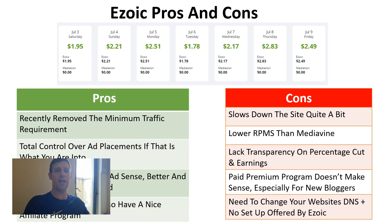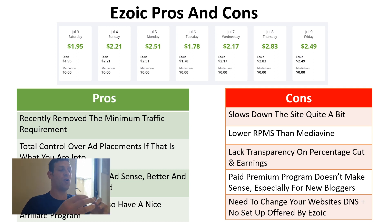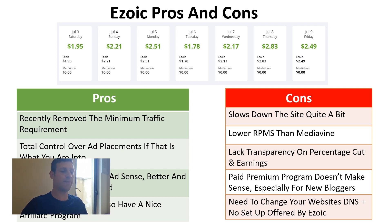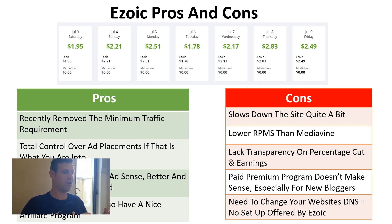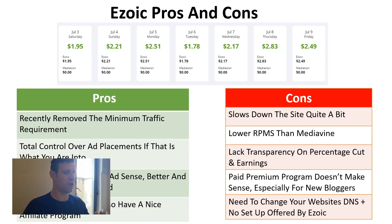Ezoic seems to be taking a large chunk of your earnings since they're offering lower RPMs than Mediavine, who are transparent about income splits. They also have a paid premium program where you pay to access premium ad suppliers — while you reportedly earn more than you pay, for new bloggers you want money coming in rather than spending on a program. You also need to change your domain name servers, and there's no setup of ad placements offered, so Ezoic is good but not great.